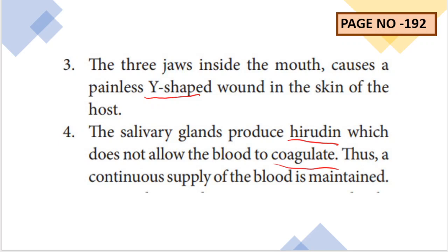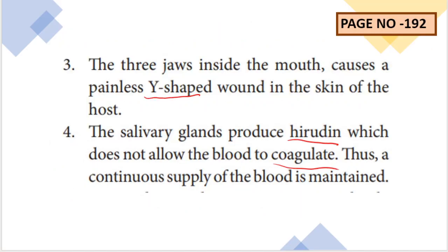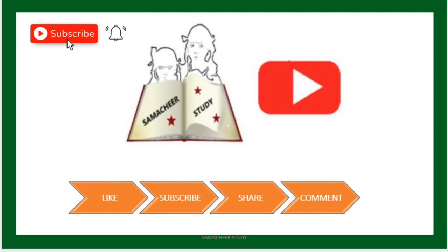So the four points of parasitic adaptations in leech are: first, blood is sucked up using the pharynx; second, anterior and posterior suckers are present; third, a Y-shaped wound is made; and fourth, the salivary glands produce hirudin — this is the important point. Hope you understand these two simple questions. If you like this video, please subscribe and share it with your friends. Thank you so much for watching.